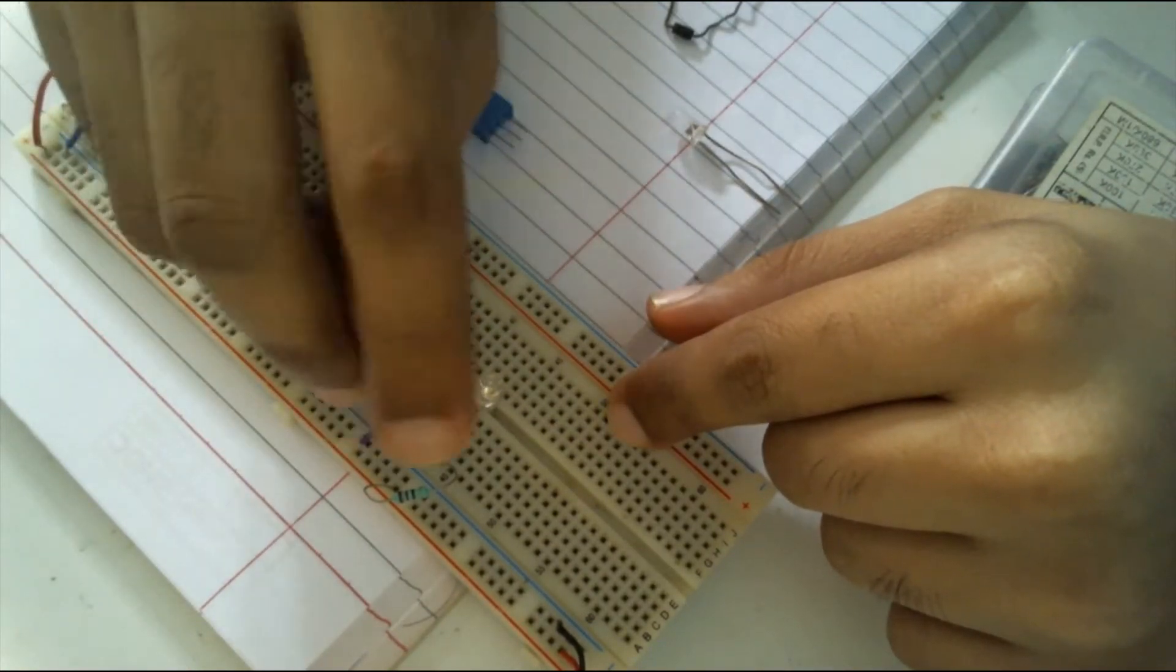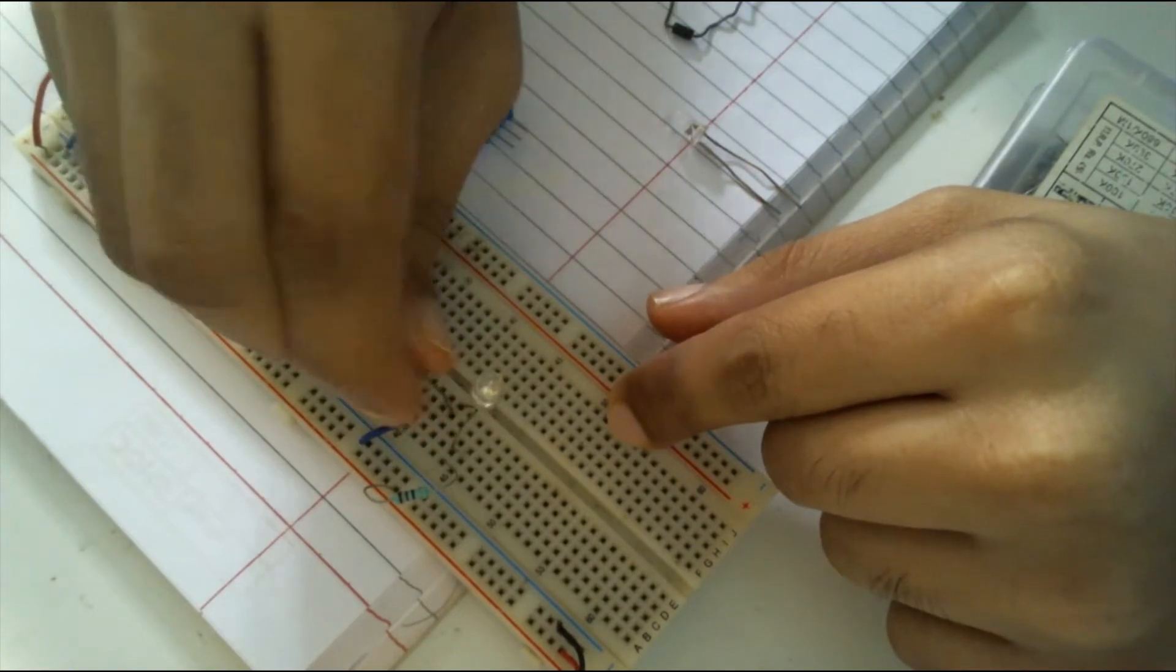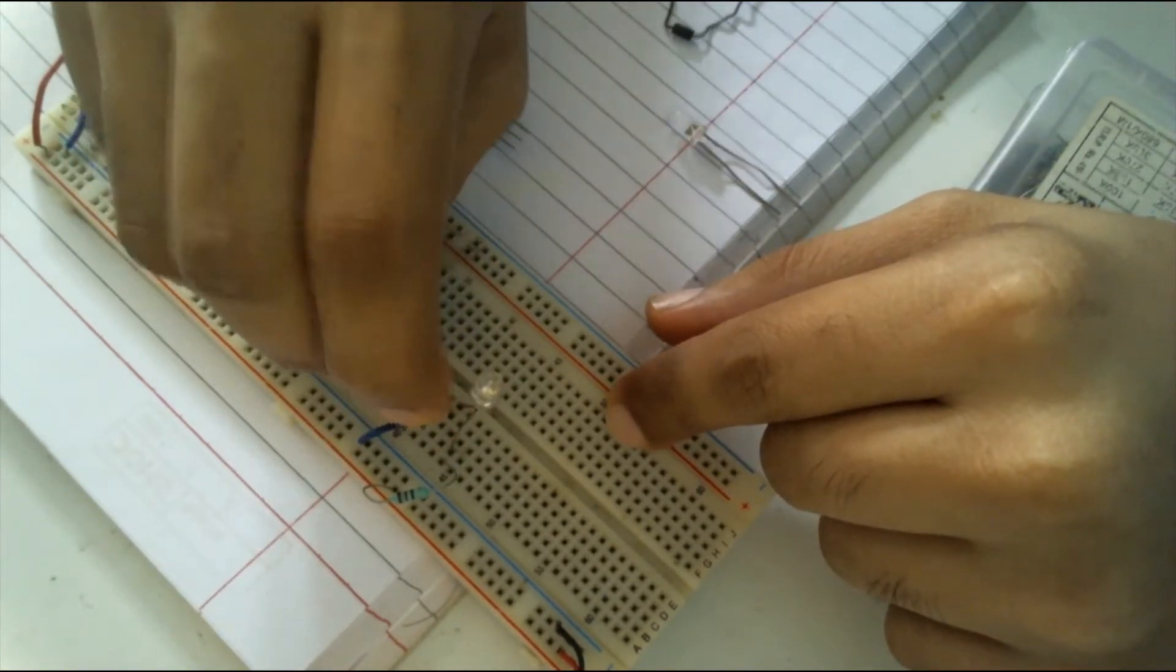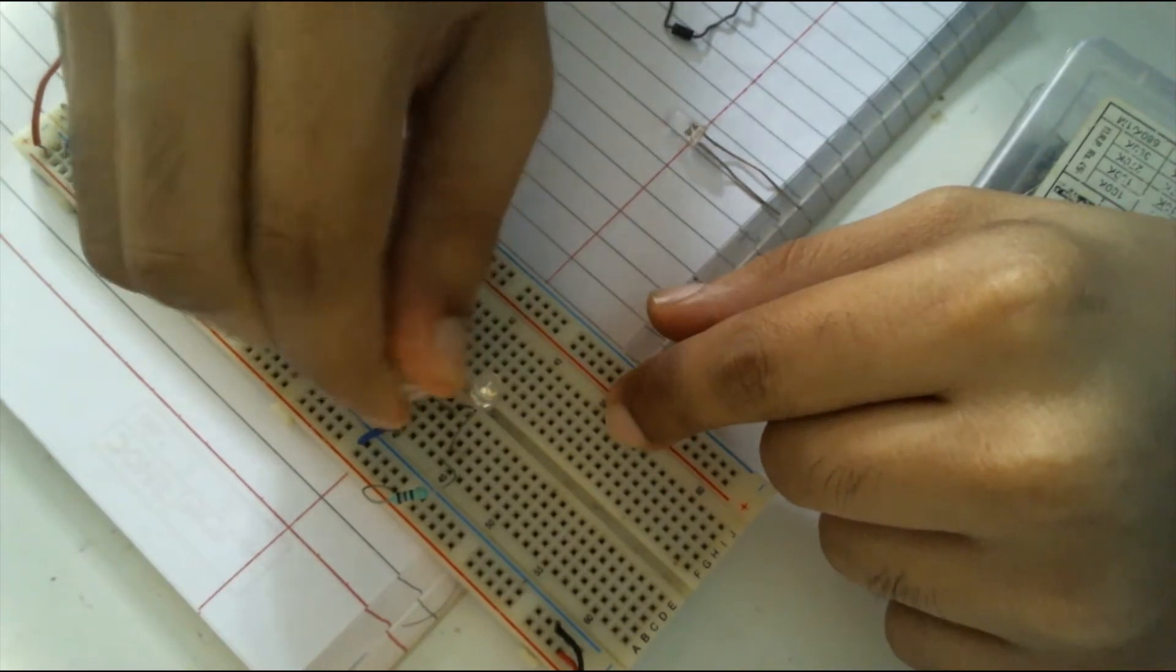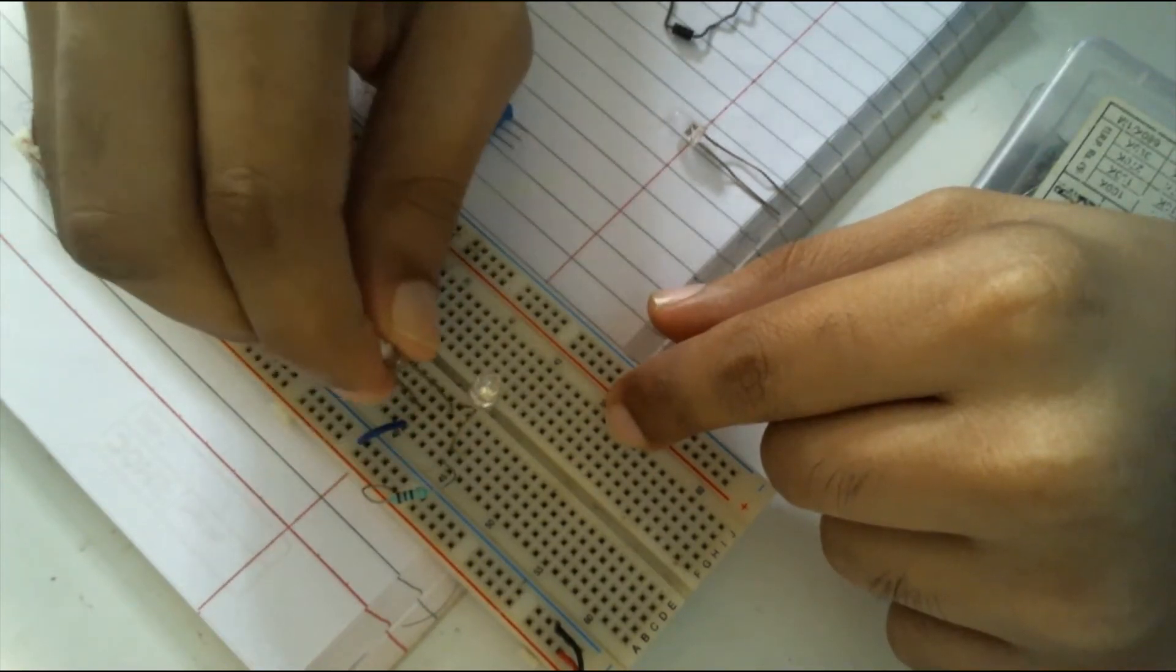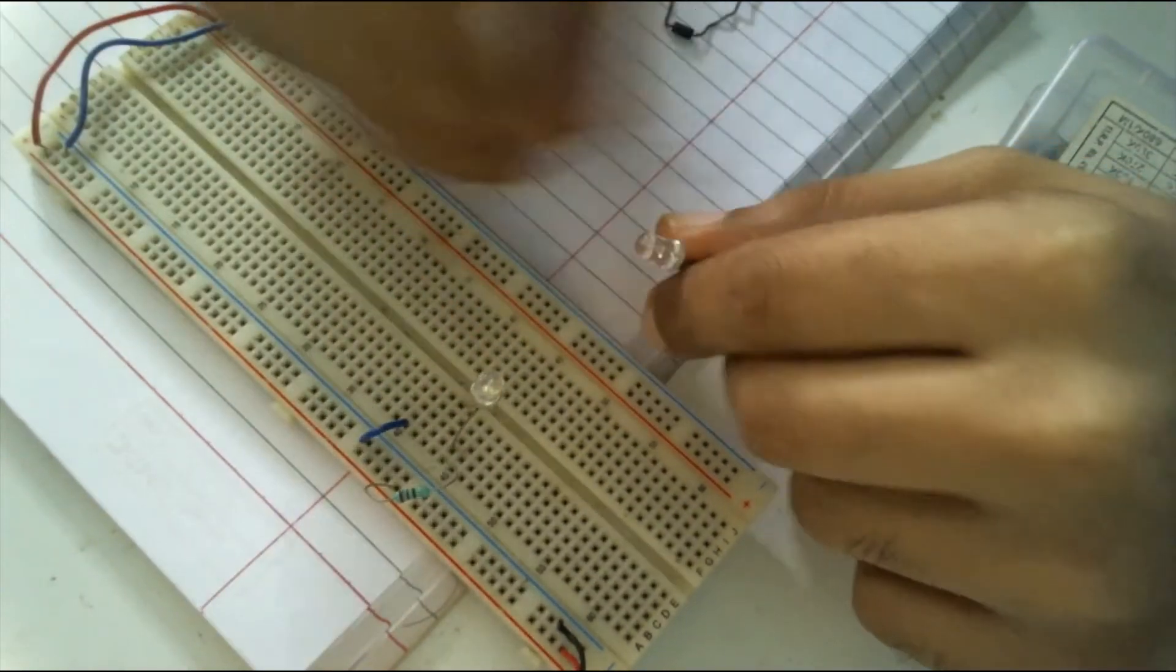See, in reverse bias it doesn't glow. In forward bias, it has failed. Now it is also damaged like this one.